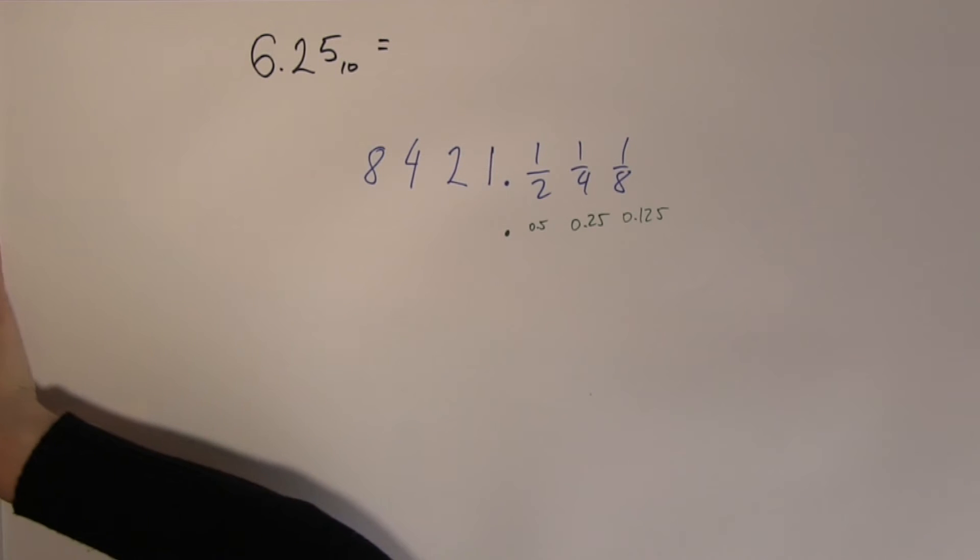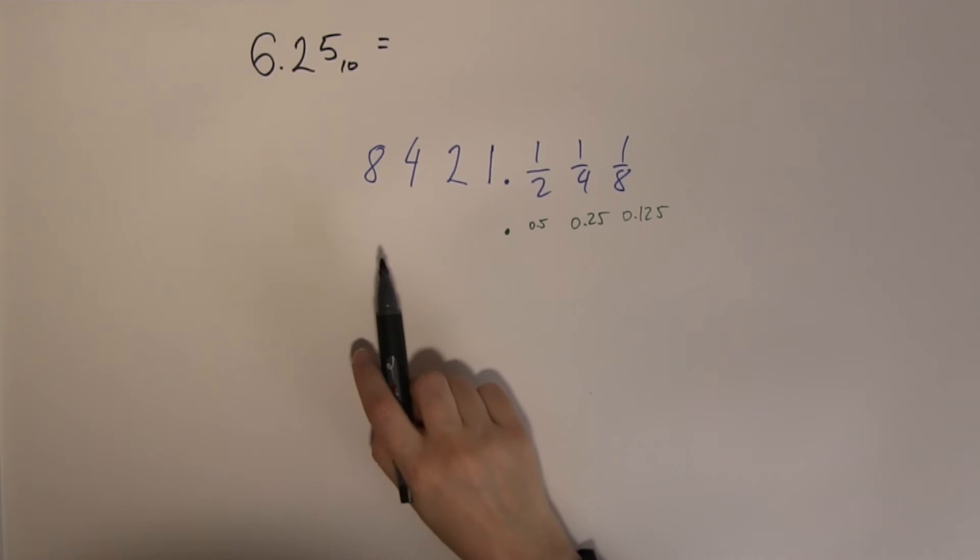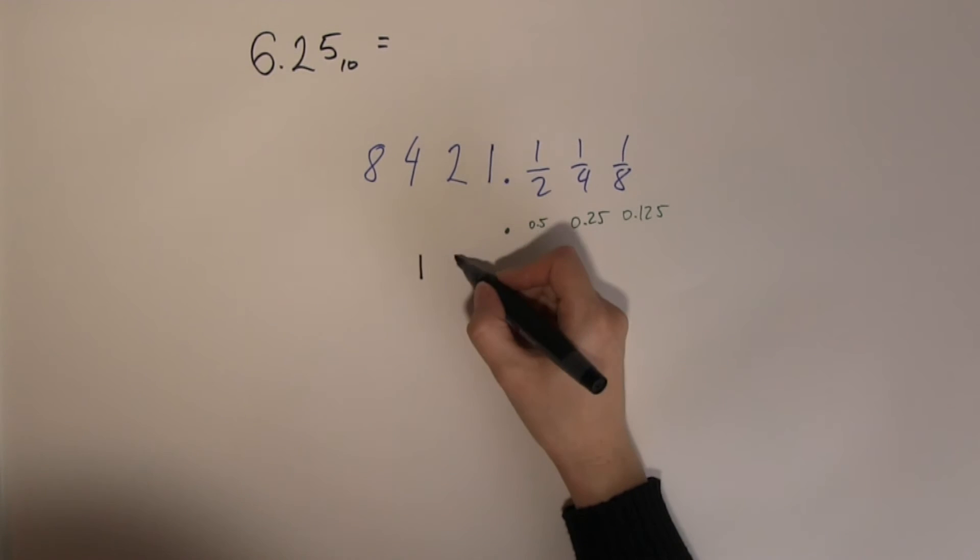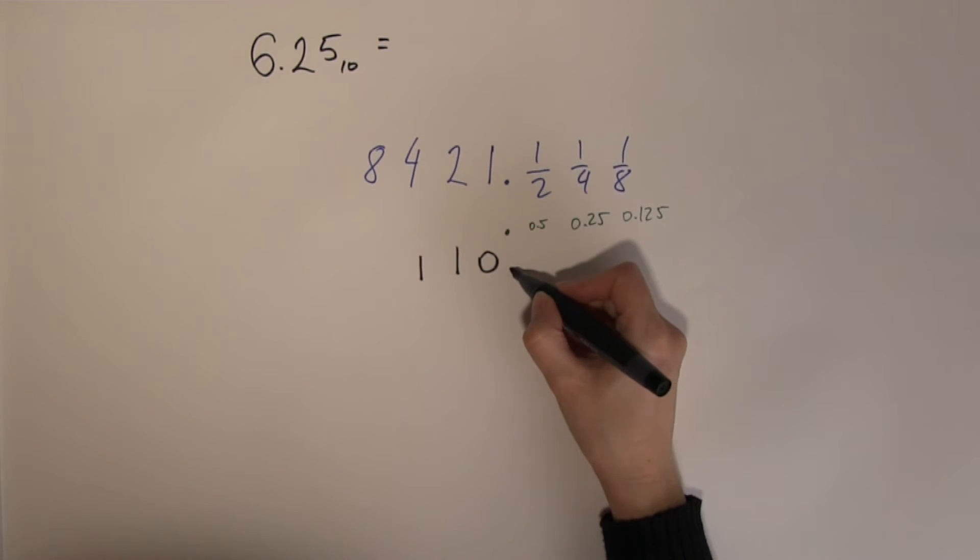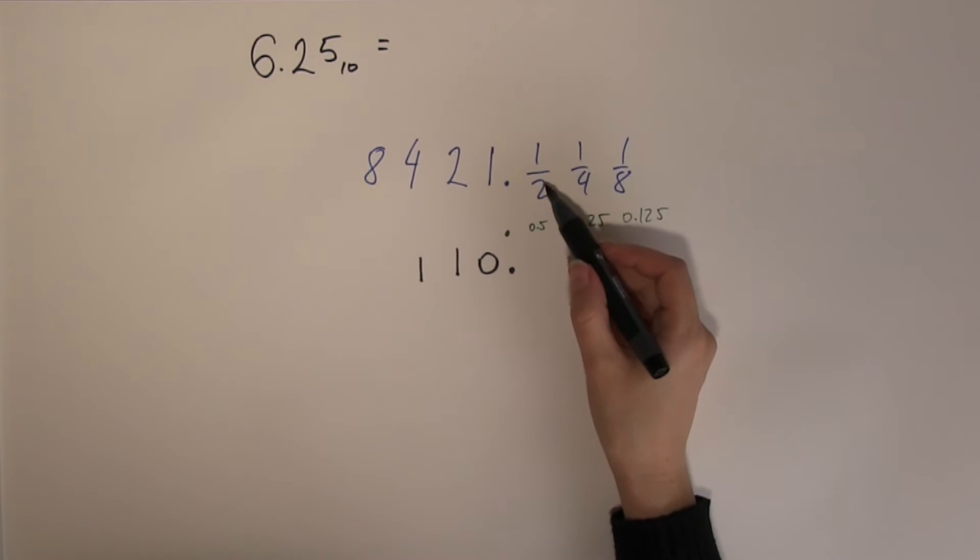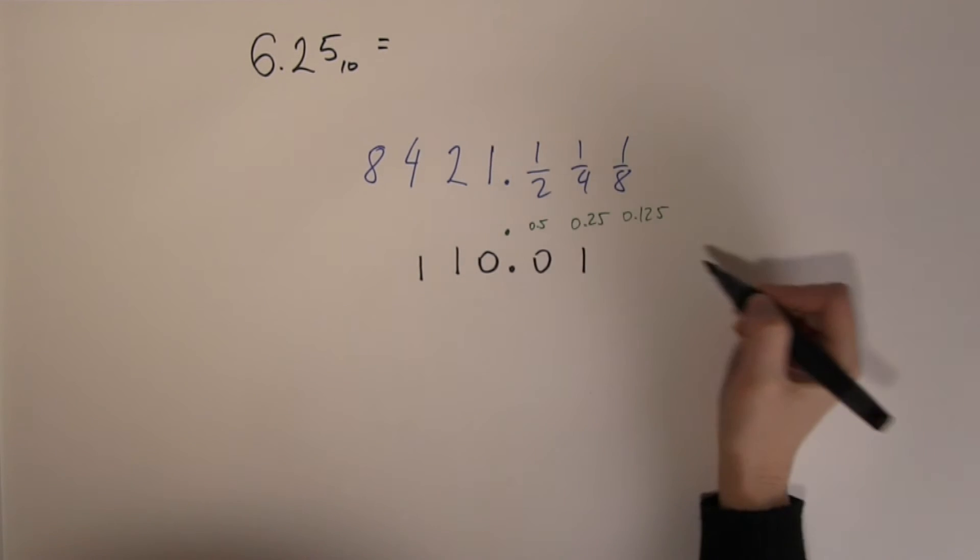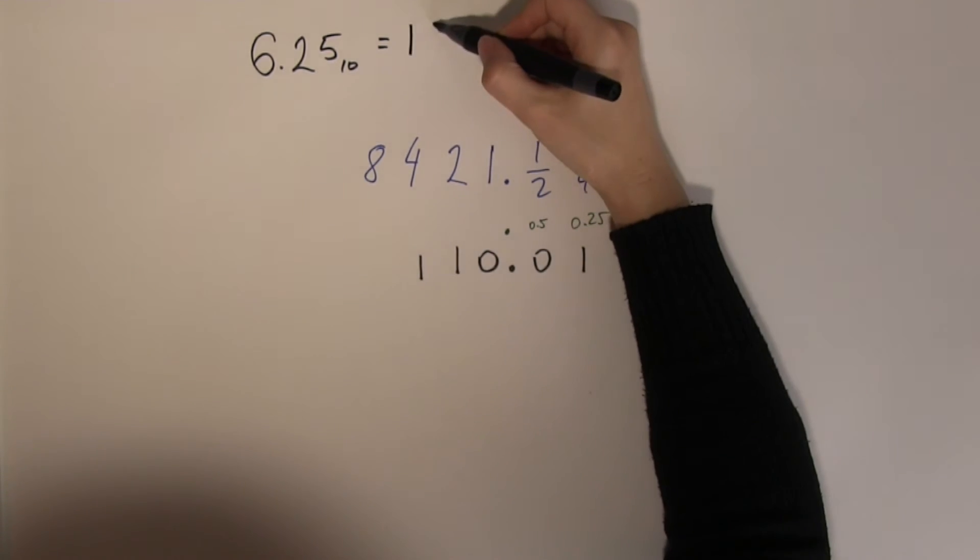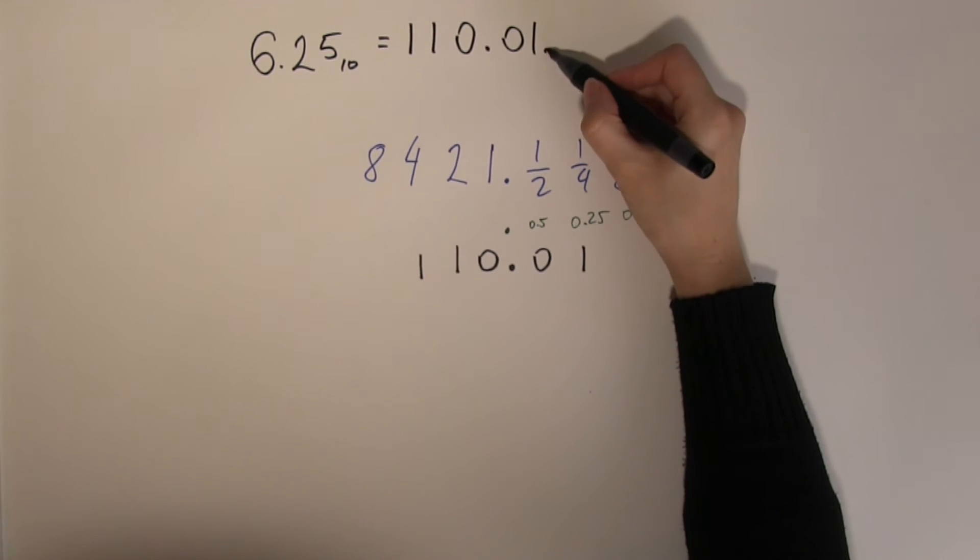So luckily this is a rather simple fraction to convert into binary fraction, because 6 will be the sum of 4 and 2, so I need a placeholder 0 for the 1. Radix point. A half I am not using, because all I am using is 0.25. So 6.25 in decimal is the same as 110 radix point 01 in binary.